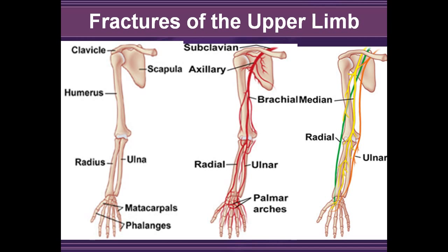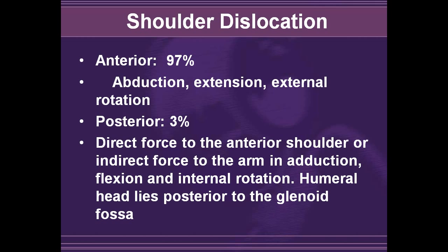Now we'll cover specific fractures of the upper limbs. The upper limb includes the clavicle, scapula, humerus, radius, ulna, various metacarpals, and phalanges. Knowing the nerve and vascular distribution is also important. Dislocations of the shoulder are fairly common — anterior dislocation accounts for 97%, whereas posterior dislocations are fairly uncommon. Usually a direct force to the anterior shoulder, or indirect force to the arm in adduction, flexion, and internal rotation leads to a posterior dislocation.